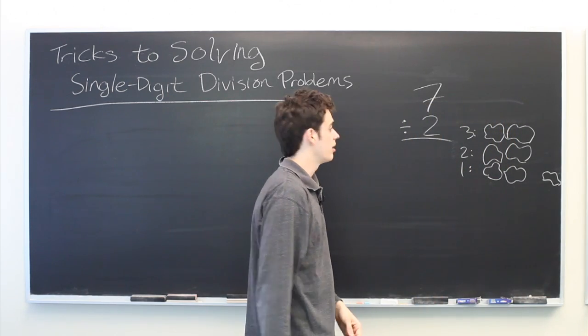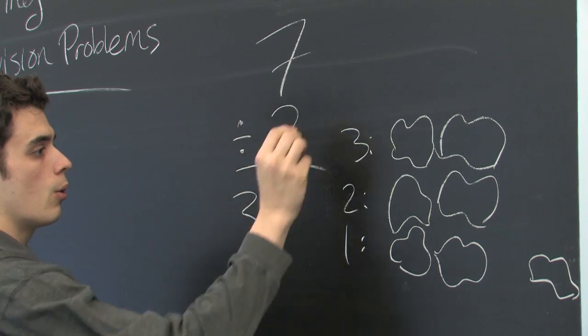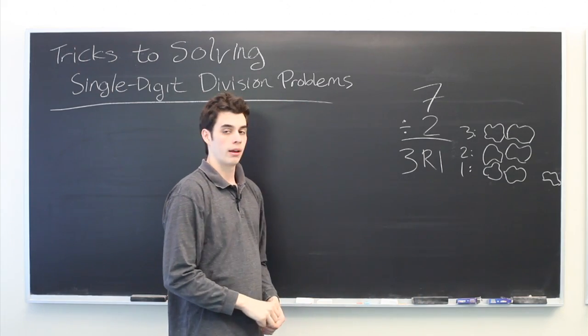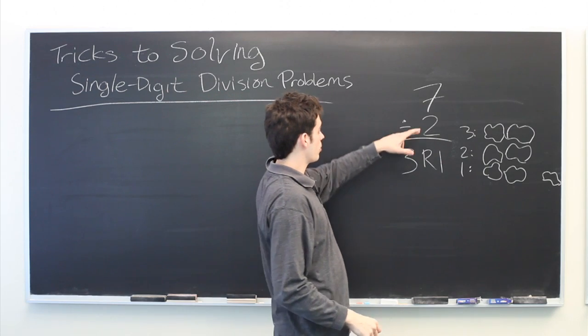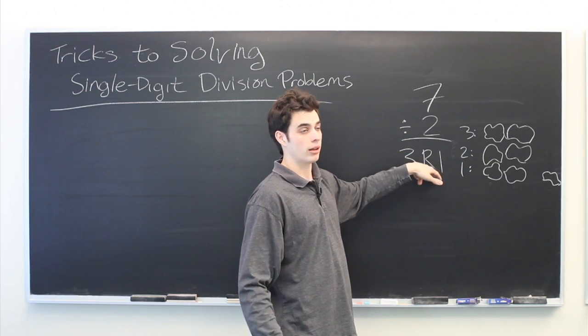So what this tells us is the answer is 3 with a remainder of 1. And you can check this by going backwards. 2 times 3 is 6 plus our remainder of 1 is 7.